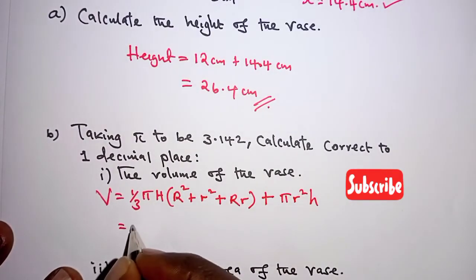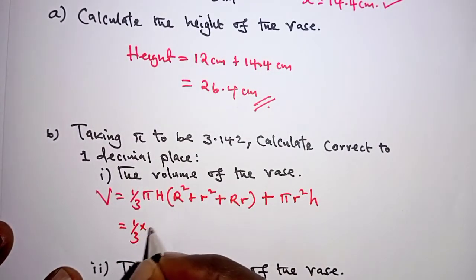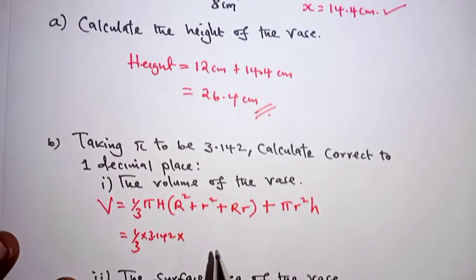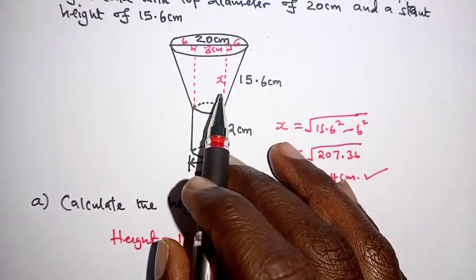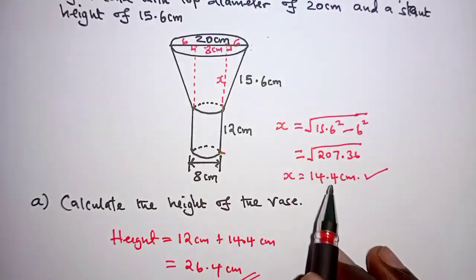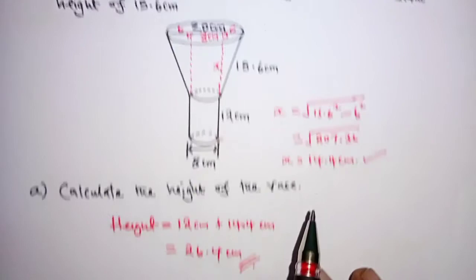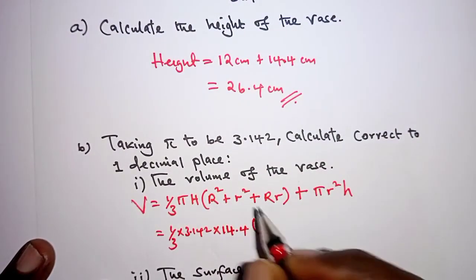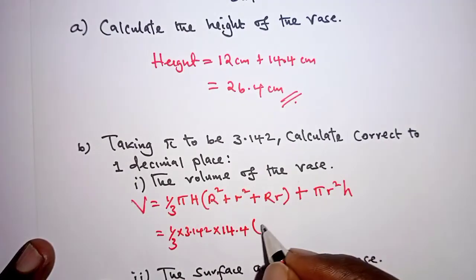for this first part, we have a third times 3.142, times the height of the frustum, the height is x, and we've gotten it as 14.4. So, we have times 14.4,